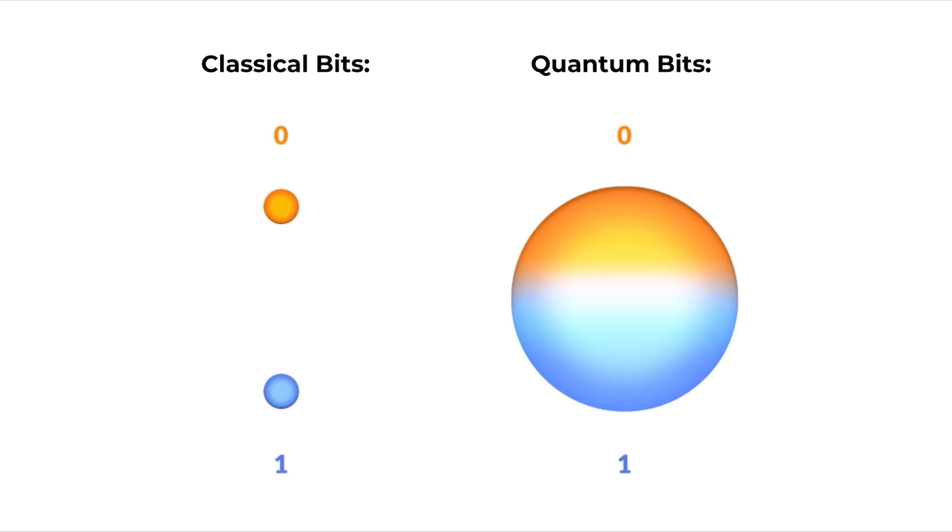Except when you measure a qubit, the superposition disappears and the qubit collapses into a definitive state of zero or one, basically like classical computers. And this is based on the probability of a qubit. Don't worry too much about it, but those are simply just a few basics that you'll need to know to fully understand how this algorithm works.